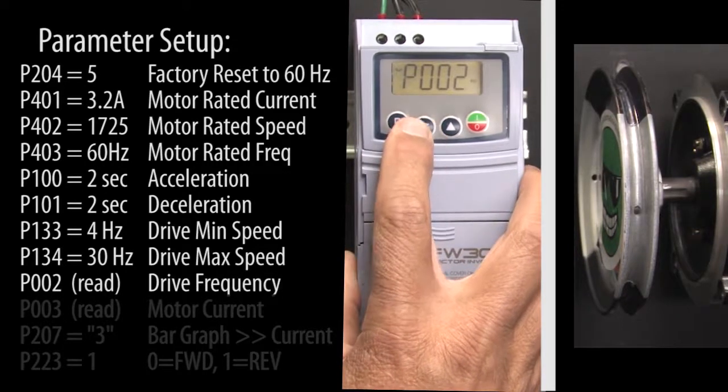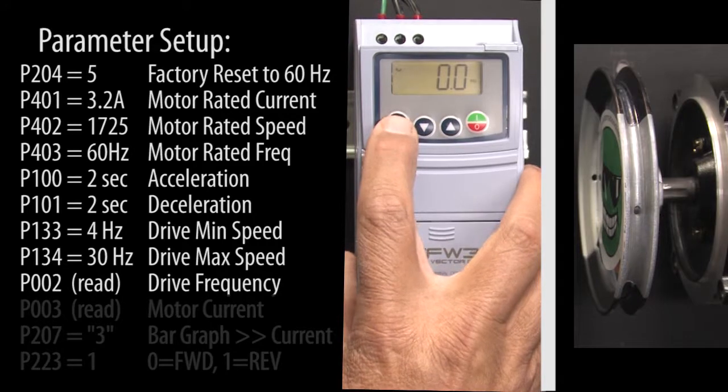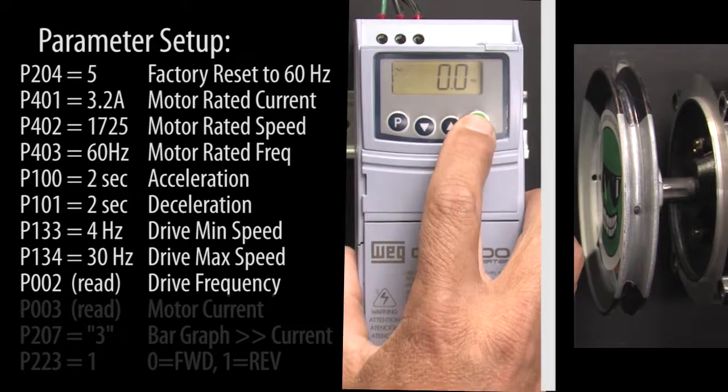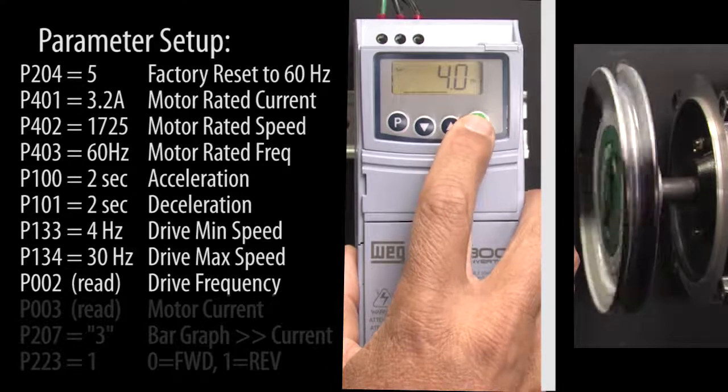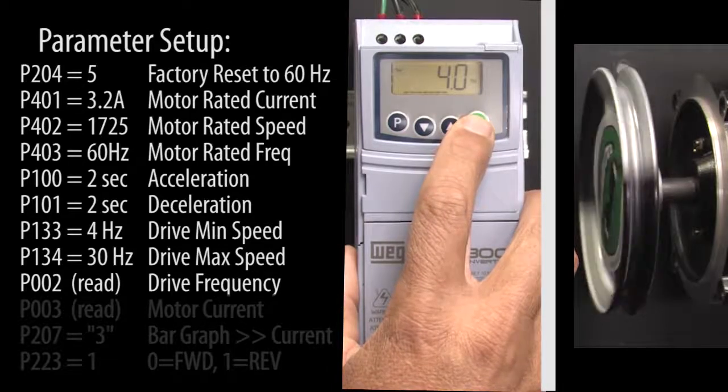Scroll to parameter 2 which shows us the drive's output frequency and press the run stop key to start the motor. And sure enough, the drive ramps the motor to the 4 Hz minimum output frequency we just entered. Perfect.